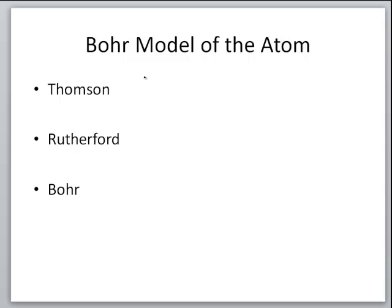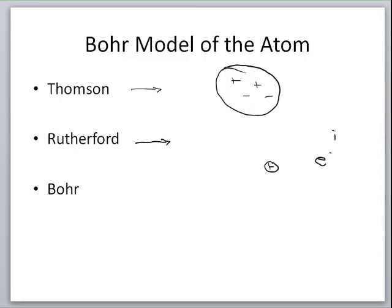In this vodcast, we're going to look at the Bohr model of the atom. Let's first review the Thomson model and the Rutherford model. The Thomson model put the atom as an area containing positive and negative values throughout, with no real structure. The Rutherford model put the nucleus at the center with electrons outside it, moving around the nucleus in some manner. Both models had problems, and Bohr came along to solve them.